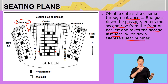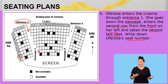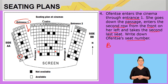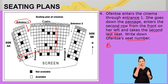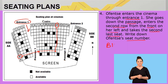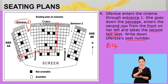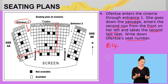So first we identify the row — we agreed it will be row B. Then, moving across like a two-way table or graph, we find where it intersects, giving us seat number 14. Therefore Offensive's seat is B14. It becomes easy if we follow exactly what the instructions indicate.